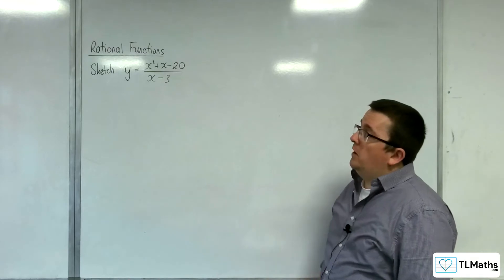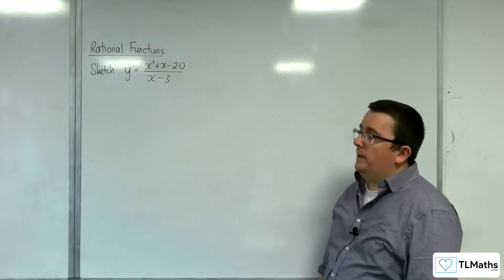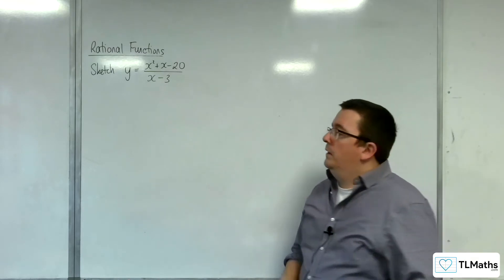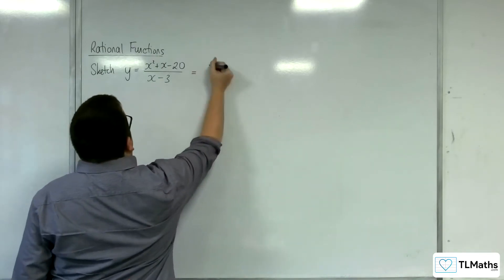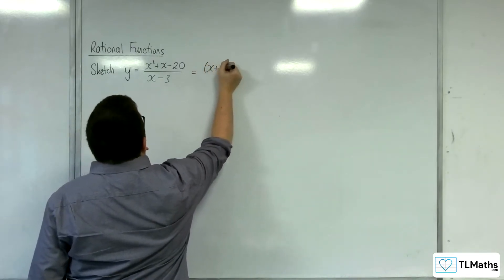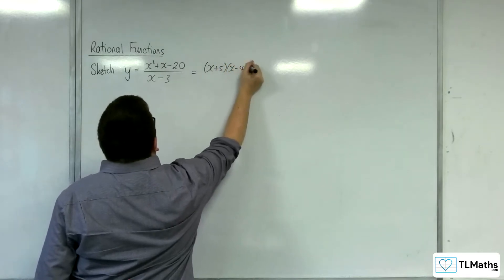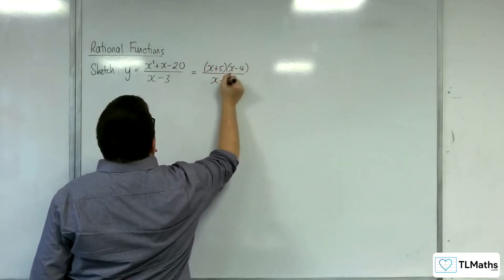In this video, I'm going to be sketching y equals x squared plus x minus 20 over x minus 3. Can we factorise the numerator first? So that would be x plus 5, x minus 4, and that's over x minus 3.